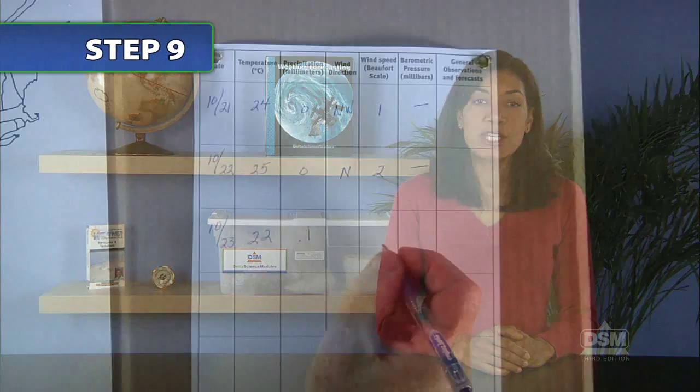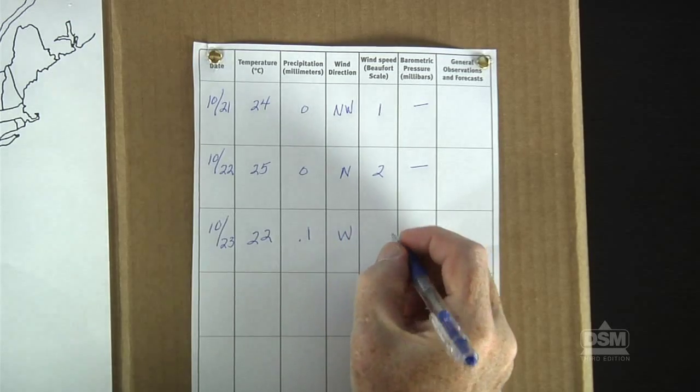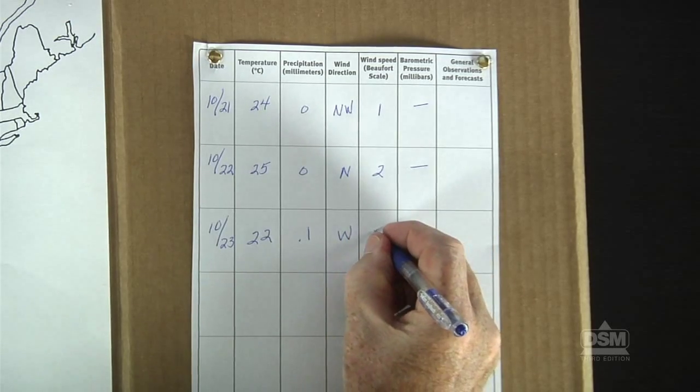The class will need access to the rain gauge. To begin Session 2, have students retrieve their weather stations and transfer the data they collected to the Daily Weather and Observation section on their stations. Remind them to record the day's date.